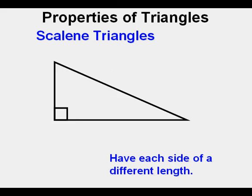This triangle is a right scalene triangle because all sides differ in length, but it also has a right angle.